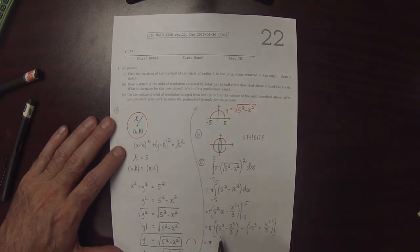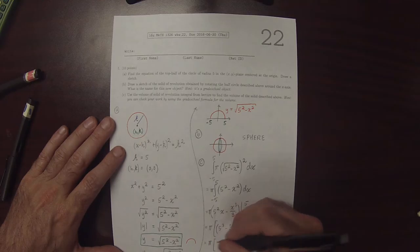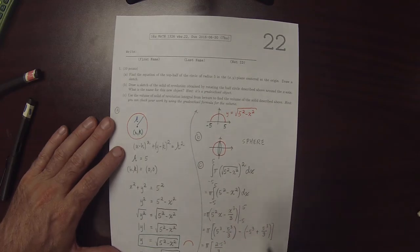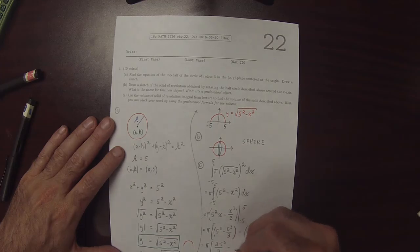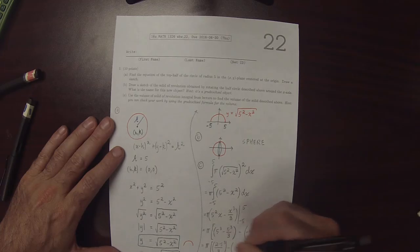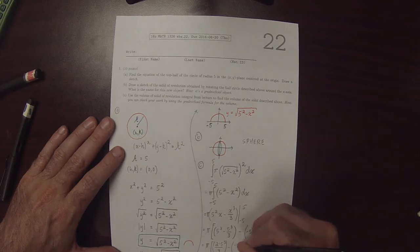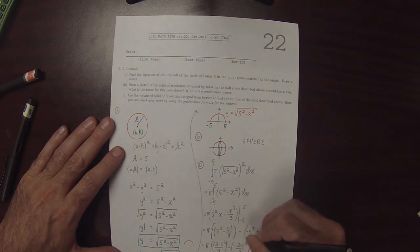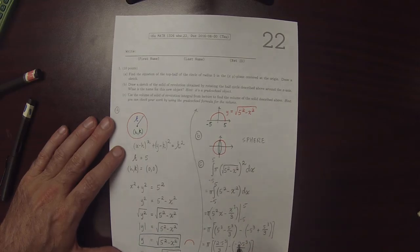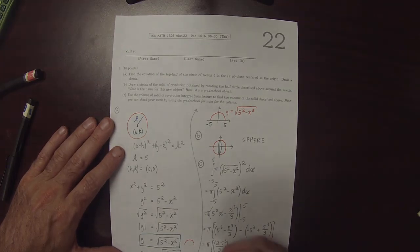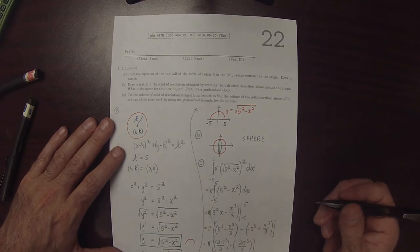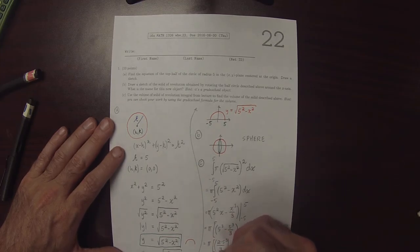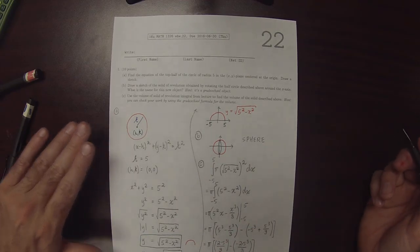So that would be pi, and we have 5 cubed minus one third 5 cubed. So this would be 2 multiplied by 5 cubed over 3. And then, now this is minus, so this is negative 5 cubed plus 5 cubed over 3, so this would be negative 2 multiplied by 5 cubed over 3. So then this, we're subtracting this negative, so the subtraction becomes addition. So this would be pi multiplied by 4 times 5 cubed over 3, which is the answer to the question.